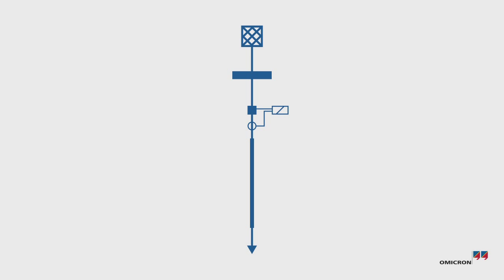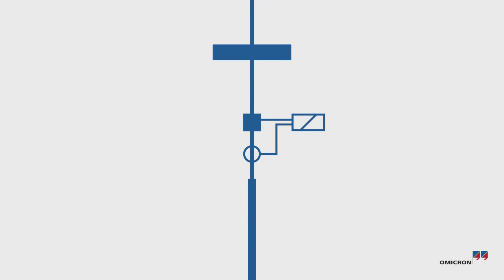We will test the auto reclosing function of a line protection relay as an example. We assume that there is a persistent fault. The relay under test will attempt to reclose twice, and we expect the relay to lock out after two reclosing attempts.